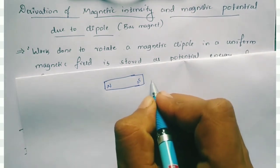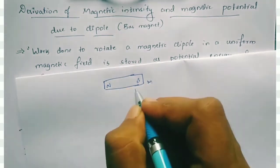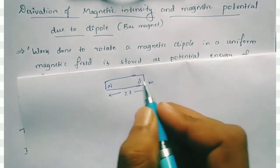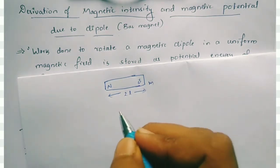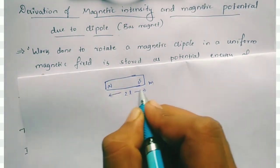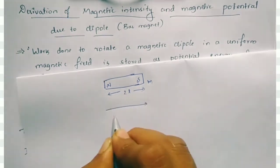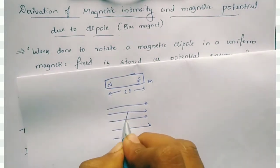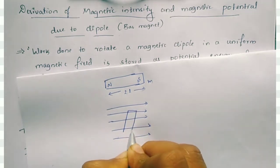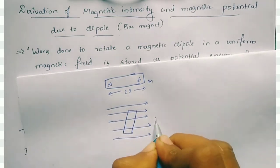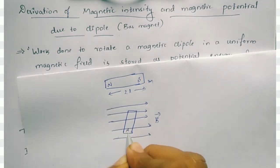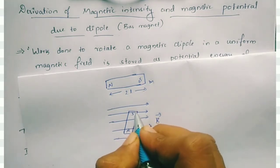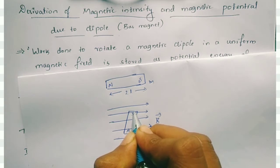These two poles have magnetization M and the bar has length 2l. This bar is a dipole, so we take this dipole inside a uniform magnetic field. We place the magnetic bar inside the uniform magnetic field lines.